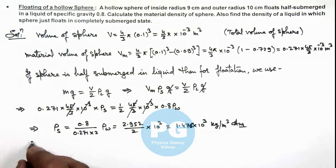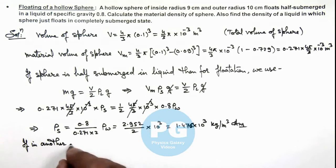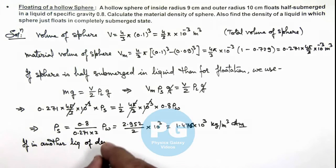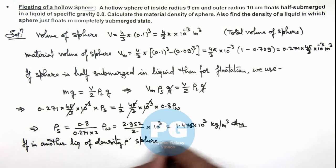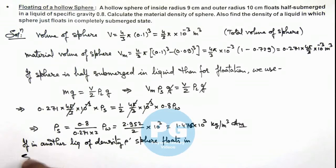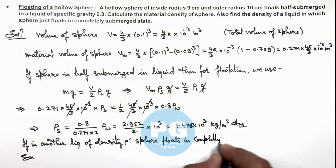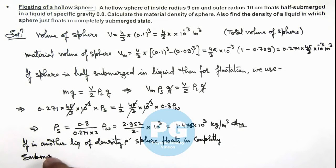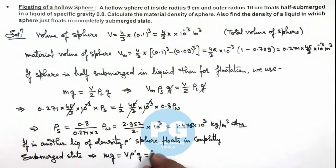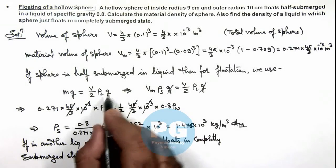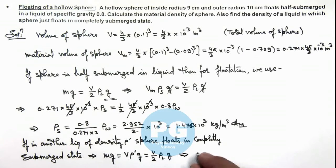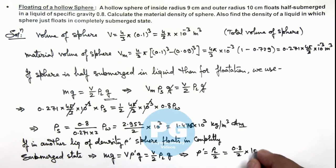Further, if in another liquid of density ρ_dash the sphere floats in a completely submerged state, then the weight of the sphere is balanced by V times ρ_dash times g. From the earlier relation, this equals V/2 times ρ_liquid times g. This gives us ρ_dash equals ρ_liquid divided by 2, which is 0.8 divided by 2 times density of water (1000), giving 400 kilogram per meter cube, which is the final result of this problem.